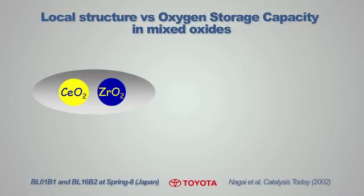The first example deals with oxygen storage capacity, which is an important factor for automotive three-way catalysts in order to efficiently remove harmful compounds such as hydrocarbons, CO, and NO from the exhaust gases. In this example, cerium and zirconium K-edge EXAFS has been measured in order to correlate the local structure to the oxygen storage capacity.